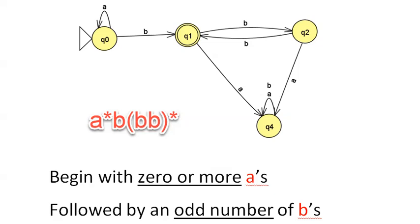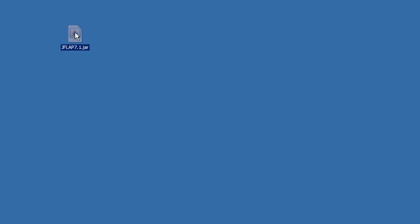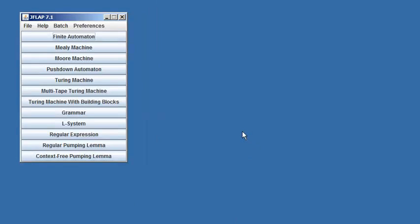I'm going to use JFLAP to create a DFA that accepts strings over the alphabet a, b that begin with zero or more A's followed by an odd number of B's. Here's a regular expression that represents that same language. I'm going to double-click on the JFLAP icon and select finite automaton, because DFA stands for deterministic finite automaton.